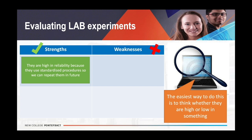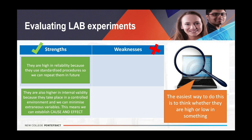Here are the correct answers. Lab experiments tend to be really high in reliability, because they use standardized procedures — everything is kept the same for all participants, which means we can repeat the study in future and get the same outcome every single time. A second strength is that lab experiments tend to be higher in internal validity. Because we've minimized extraneous variables, we can be more sure that the IV has caused the change in the DV, meaning we can establish cause and effect.